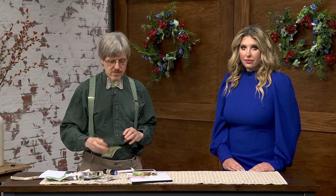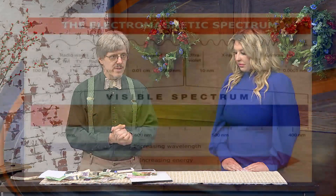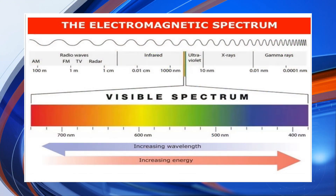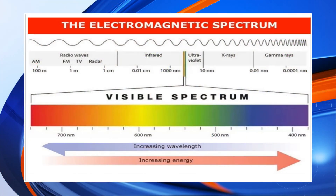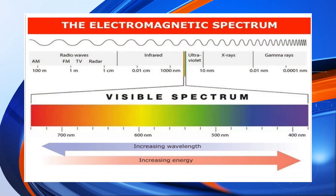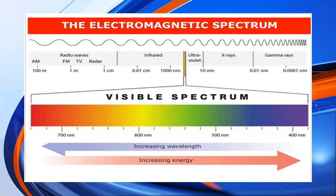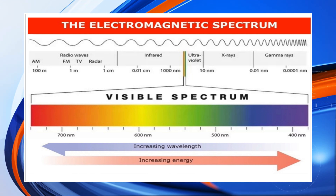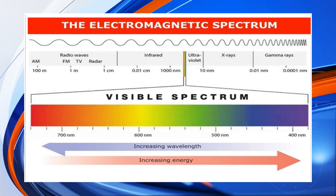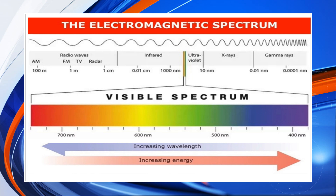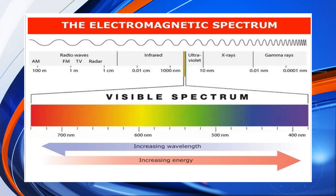Just a reminder to everyone that light is a wave and it has different colors. The longer the wavelength, the redder the color; the shorter the wavelength, the bluer the color, and the more energy in the photons. We also talked previously about a phenomenon called fluorescence.